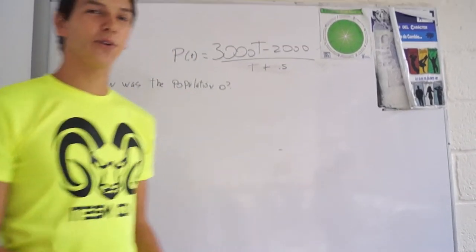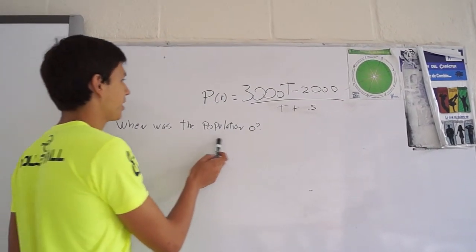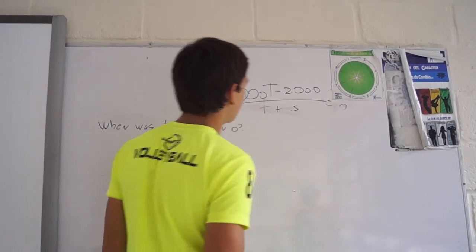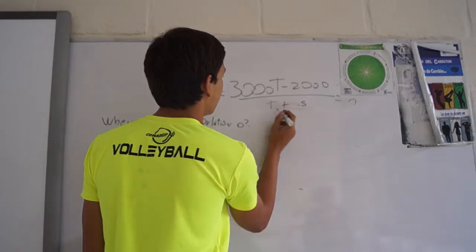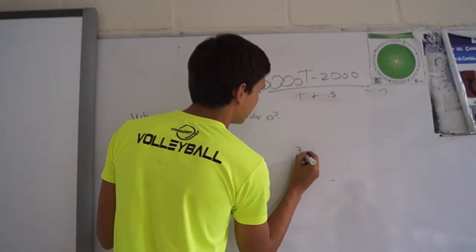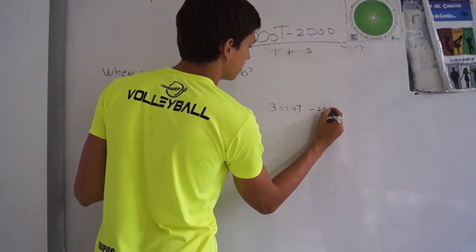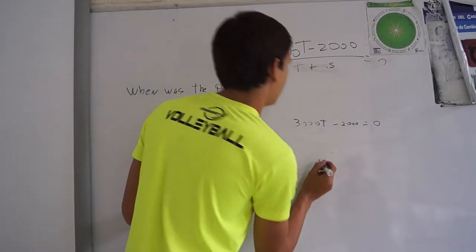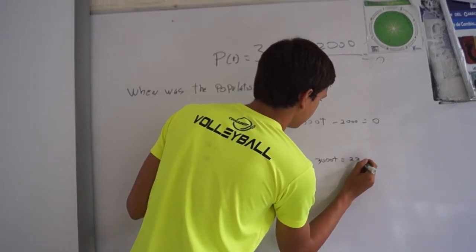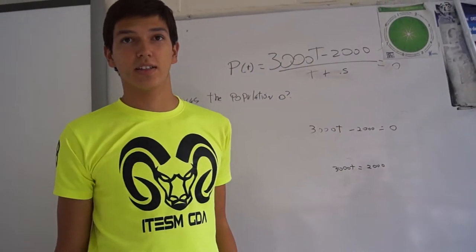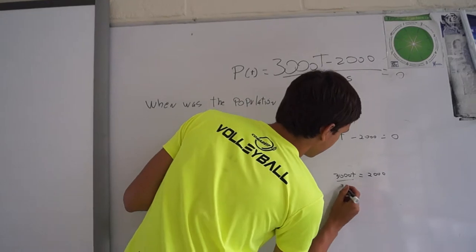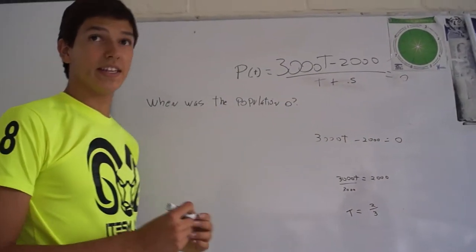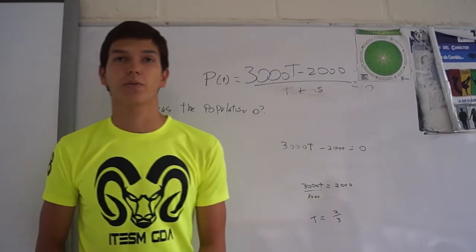Now we have to answer the question. We have to put the equation equal to zero and isolate T. So here we go. And in this case of T equals zero, the population was zero.